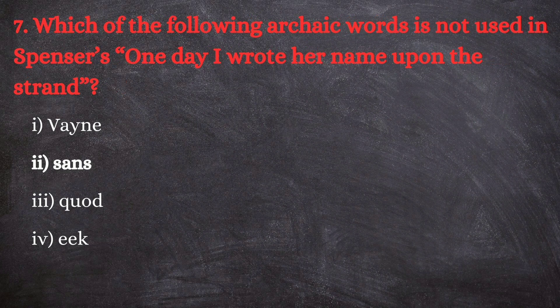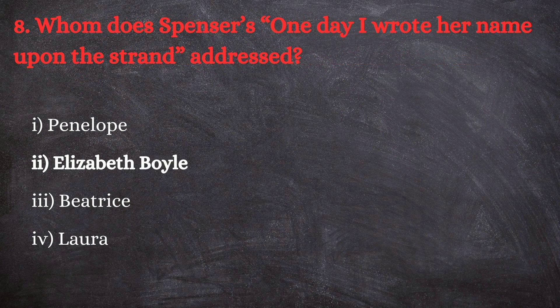Next question: which of the following archaic words is NOT used in Spenser's 'One day I wrote her name upon the strand'? Options are: first, vain; second, sans; third, eke; and fourth, ache. The correct answer is sans. Sans is actually not an archaic word — it is a French word meaning 'without.' Apart from this word, vain, eke, and ache are all used in the poem.